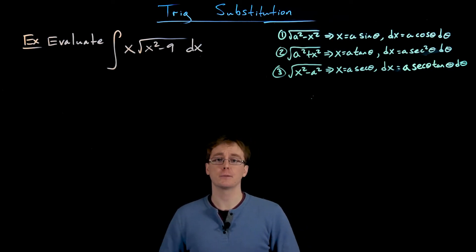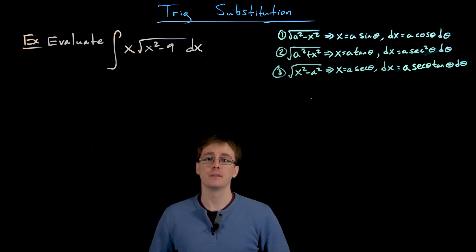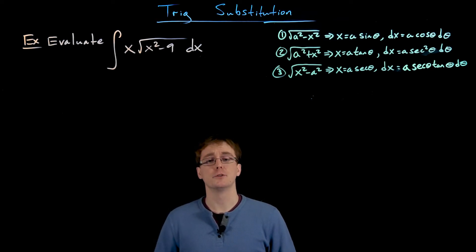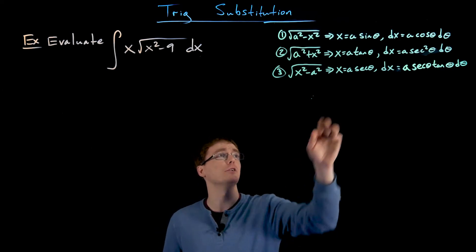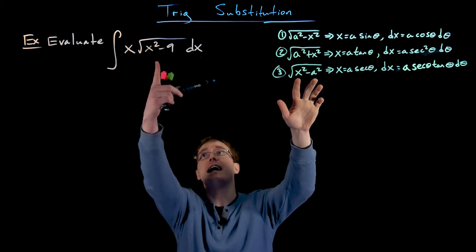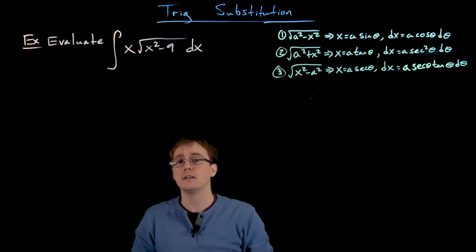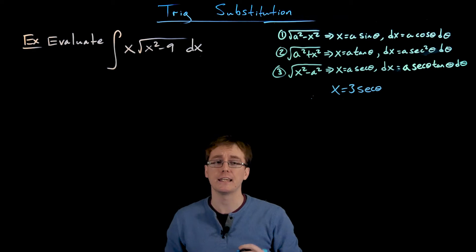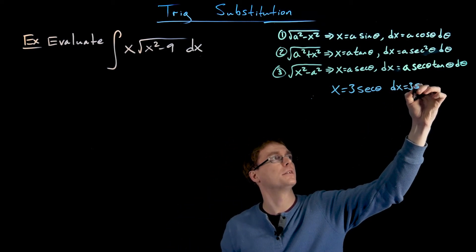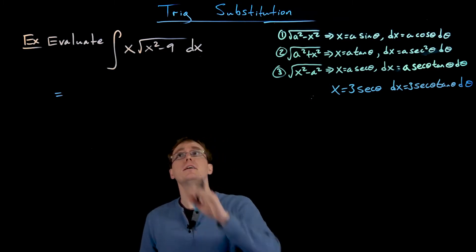In the next example we find the antiderivative of x times the square root of x squared minus 9. We need to decide whether to use a sine, tangent, or secant substitution. Because we have x squared minus a constant, we want a secant substitution. We can identify a squared equals 9, so a equals 3. We set x equal to 3 times secant of theta, and the differential of x becomes 3 times secant of theta times tangent of theta d theta.